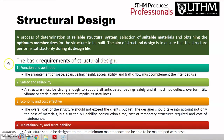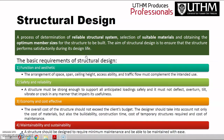The basic requirements for structural design — there are four. Number one is function and aesthetic, which is the arrangement for space, span, ceiling height, accessibility, and traffic flow must complement the intended use. Number two is safety and reliability — a structure must be strong enough to support all anticipated loading safely, and it must not deflect, overturn, tilt, vibrate, or crack in any manner that impacts its usefulness.